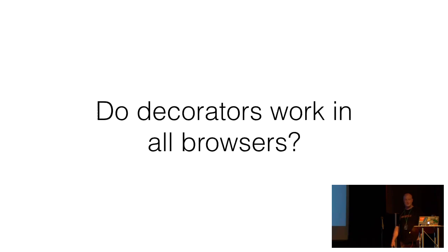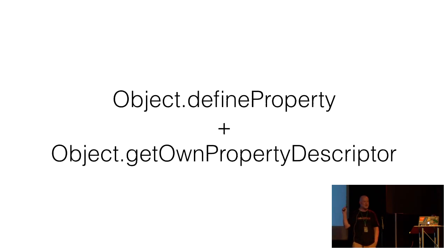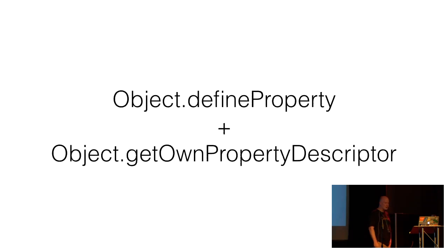Let's talk a little bit about browser support. Which browsers support decorators? Zero — there's no native support for decorators at this time. This means you need to transpile to ES5 or ES6. Luckily, once you transpile the decorator code, these are really the only two object methods you need: Object.defineProperty and Object.getOwnPropertyDescriptor. There's been broad support for these methods going all the way back to Chrome 5, Firefox 4, and even IE 9. So once you transpile this code, the resulting code from decorators is going to work just about anywhere.